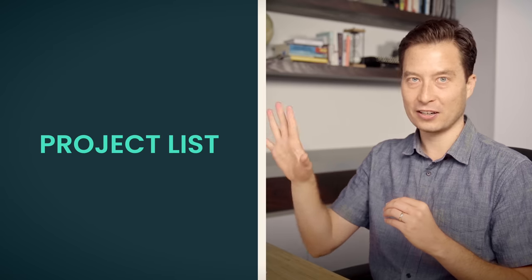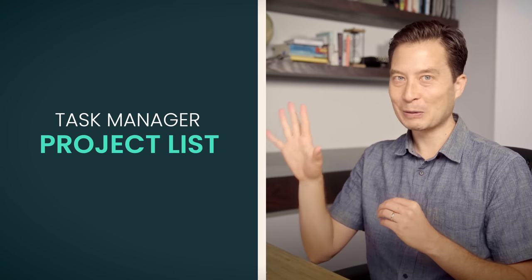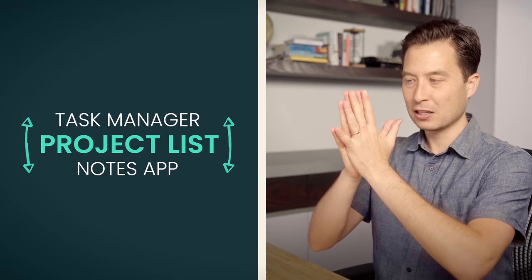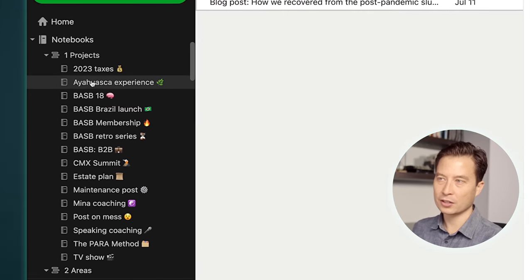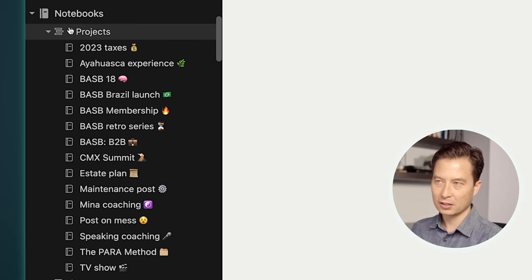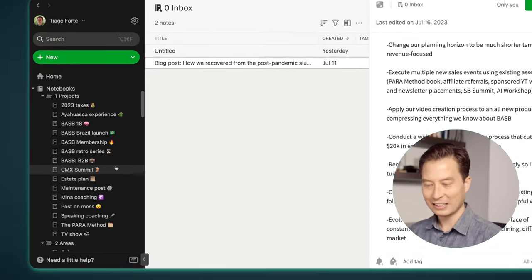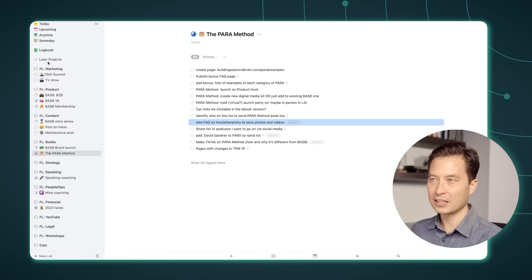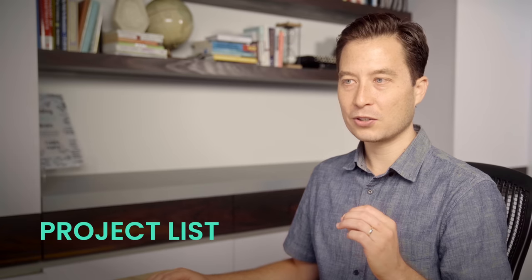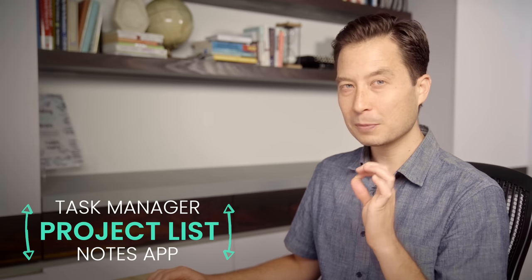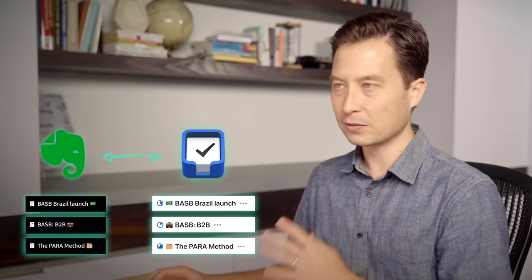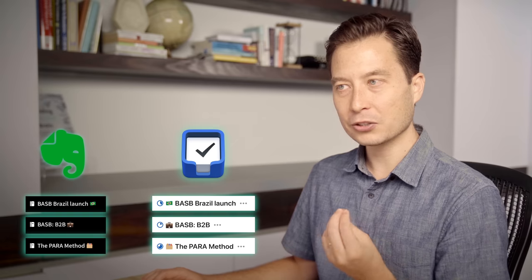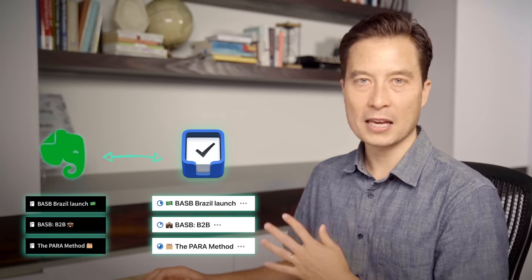This is where it's so important to have the same exact project list over here in your task manager and the same exact project list over here in your notes app. This should be almost like a mirror, like two sides to the same coin. If you look at my screen, that's exactly what you see. I insist on using the exact same project title with the same spelling, the same capitalization, the same punctuation, and I even use the same emoji so that as I'm switching back and forth between these two different programs, even the colors and the shapes of that emoji help me make that switch easier.